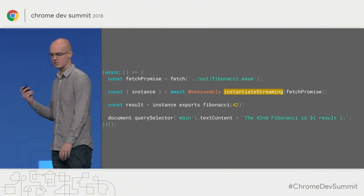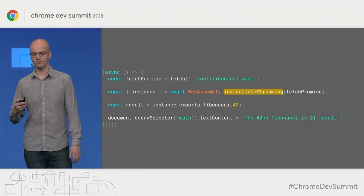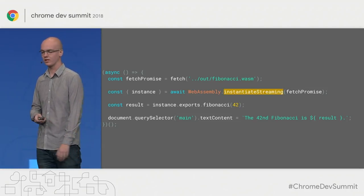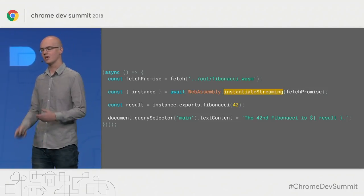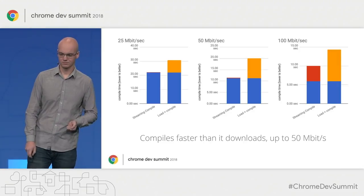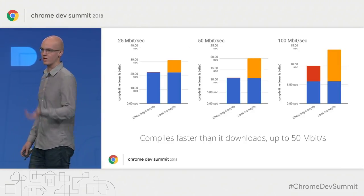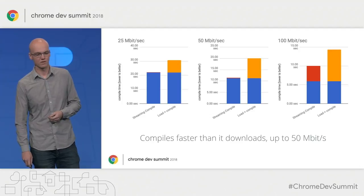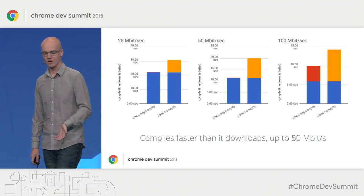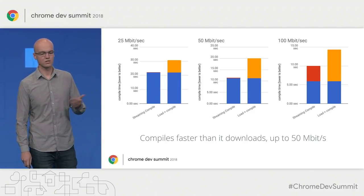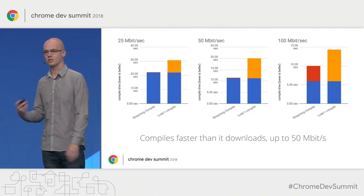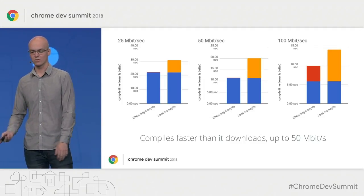Here's a simple example where we call the fetch function for a WebAssembly Fibonacci module, and then we just pass that fetch promise directly into WebAssembly.instantiateStreaming, and it takes care of all of the underlying bits and pieces for you. We did some profiling at different network speeds. We found that all the way up until 50 megabits per second, the network was actually the primary bottleneck, and compilation was done as soon as the module was loaded. It wasn't until 100 megabits per second that you needed additional time to fully compile.